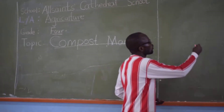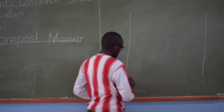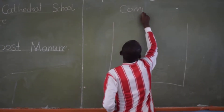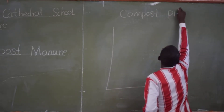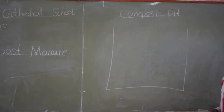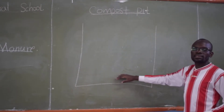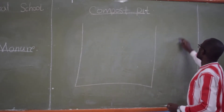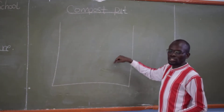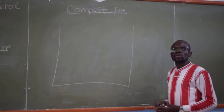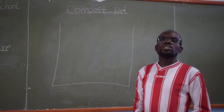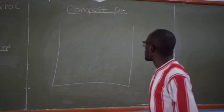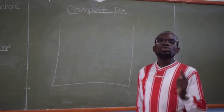Let me draw a simple structure of our compost pit. We have two methods of making compost manure: you can either pit or heap. We pit during dry seasons and we heap during rainy seasons. Why do we heap during rainy seasons? It is because of the flooding that is happening — if you pit during a flooding season, you know what will happen to the materials.